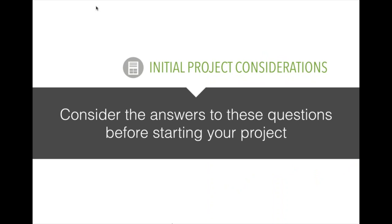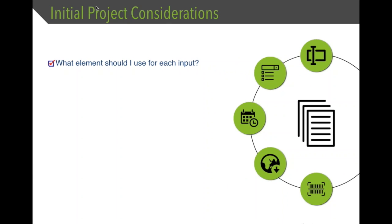These initial project considerations are meant to be phrased as questions you want to consider before starting your project. The first initial project consideration is what element you should use for each input. With iForm Builder we have a lot of different elements — ways to input and collect your data — and each one has a specific use case. Choosing the right element improves form quality and minimizes errors and corrections you may have to address later on.